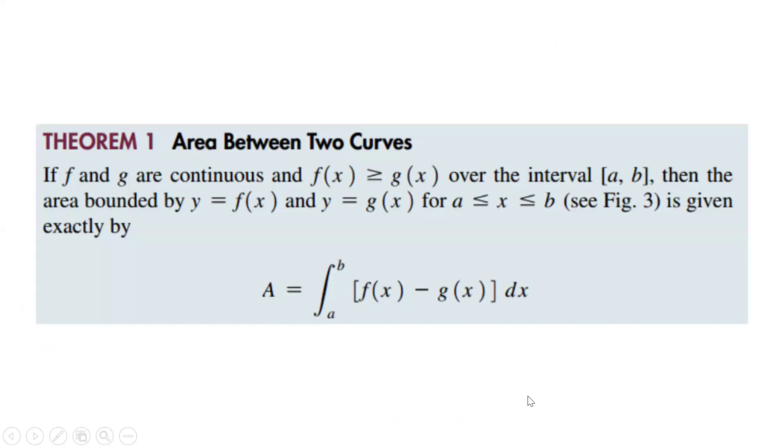This gives us Theorem 1, which is the area between two curves. If f and g are continuous and f(x) is greater than g(x), we always want to put the f(x) first. Then over the interval [a, b], the area bounded by y = f(x) and y = g(x) for a ≤ x ≤ b is given exactly by this equation.